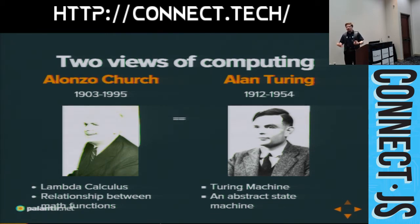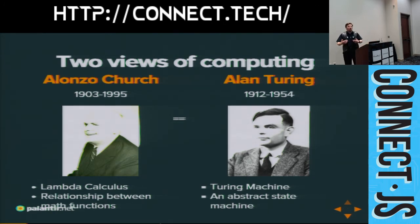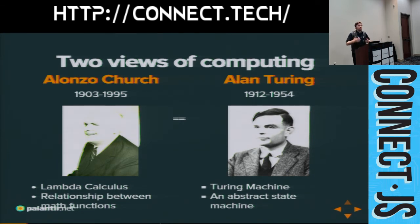They got together and demonstrated that in fact these two systems are equivalent — meaning there is no concept or structure that can be represented in one that cannot also be represented in the other. It might be more efficient in one, might be more understandable in one, but both of them are capable of expressing all the same things. In fact, no one in a century has come up with a way of expressing computation that is more expressive than these two. There are others that are just weird, that are equally expressive, but nothing more expressive.